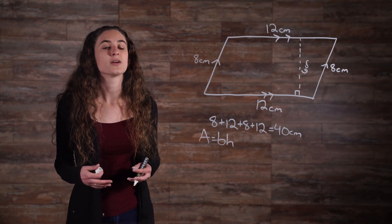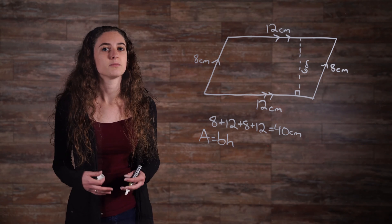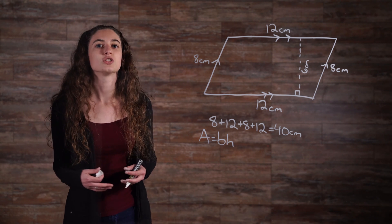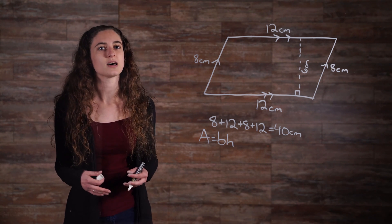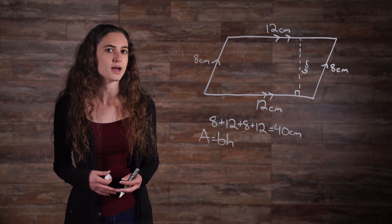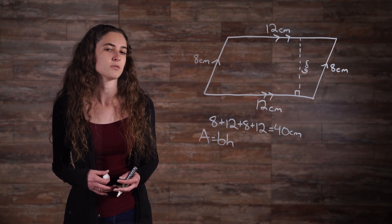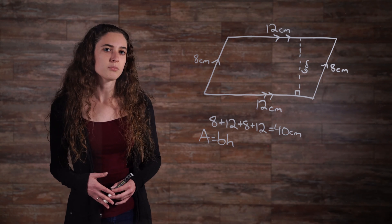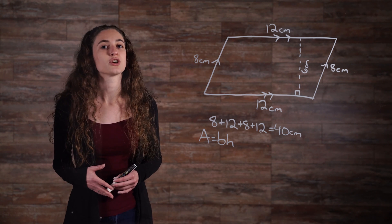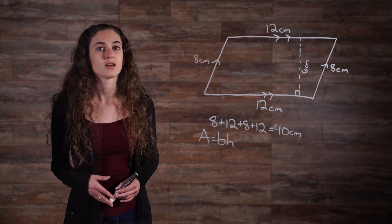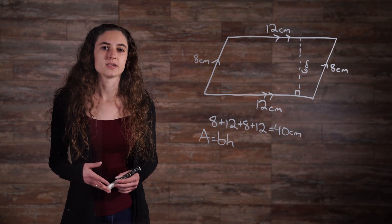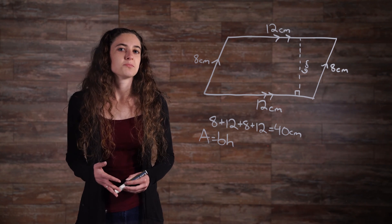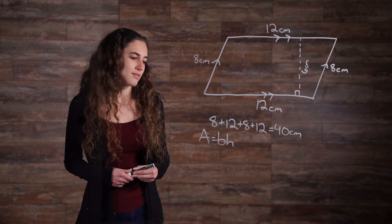Once we find the height, we can find the base, because the height or altitude is perpendicular to the base. So in this case, the height is perpendicular to the top and bottom sides of the parallelogram. It doesn't matter whether we pick the top or the bottom to be the base, because they are congruent. For our sample problem, the base is 12 cm. Now all we have to do is plug in these numbers into our formula.